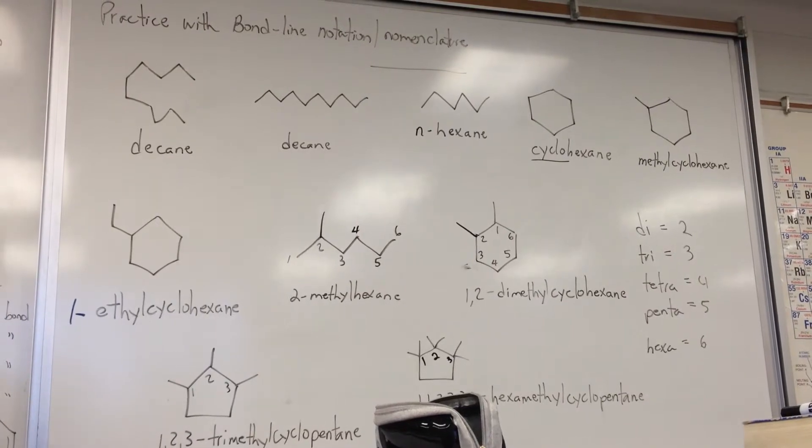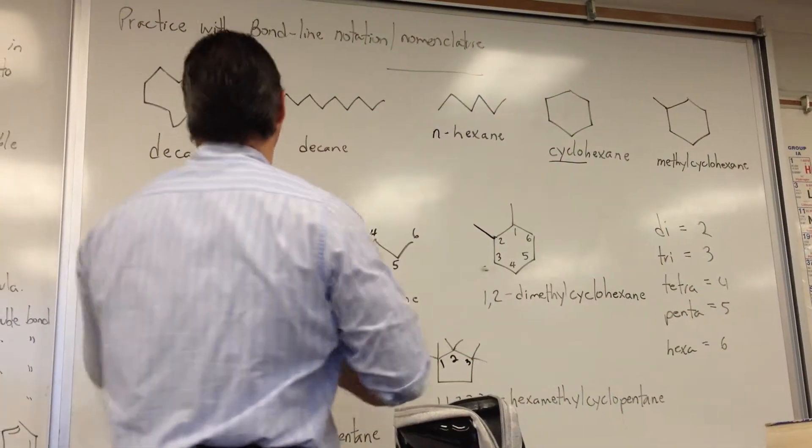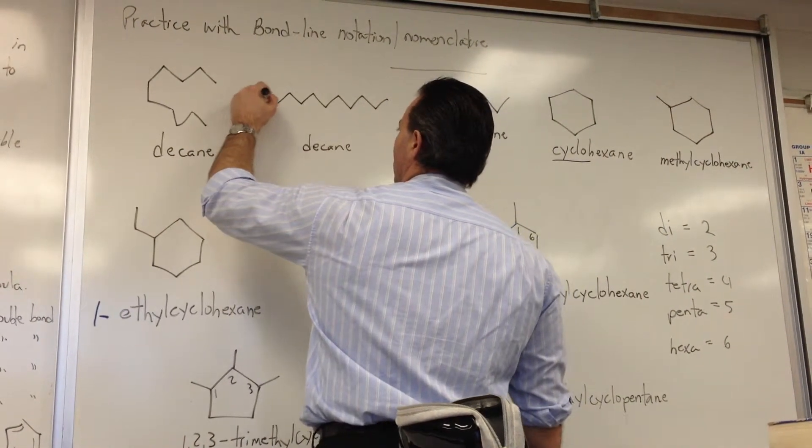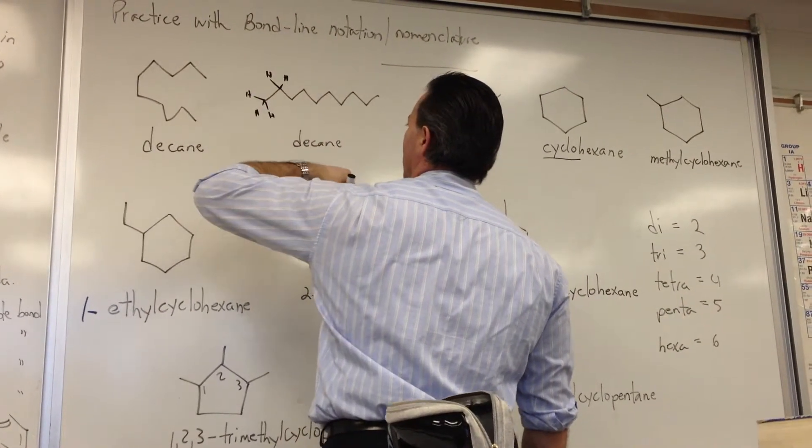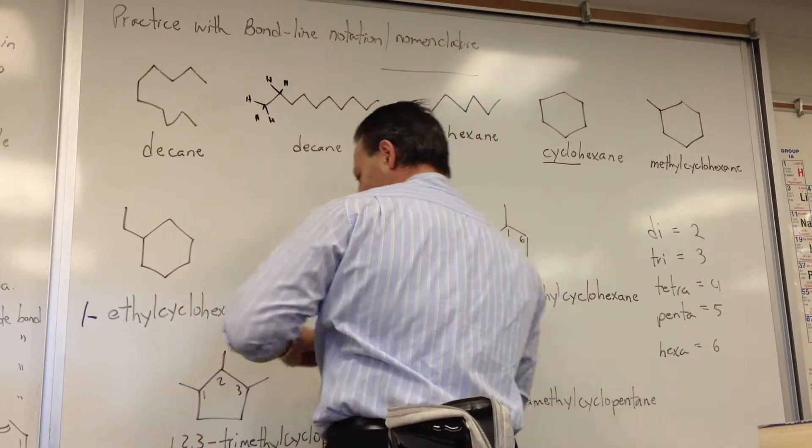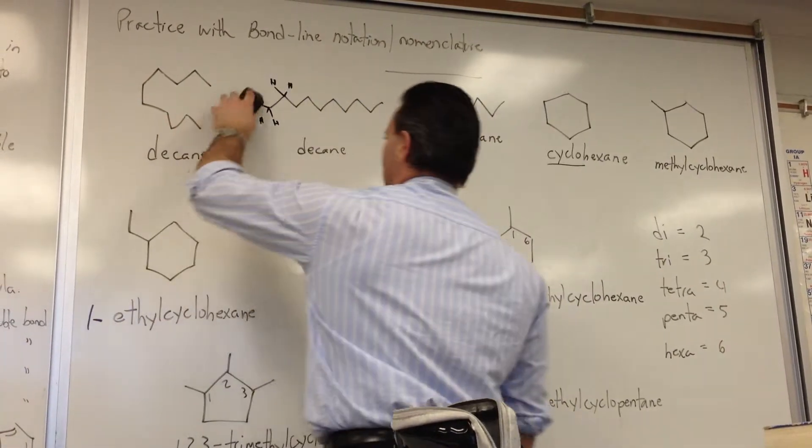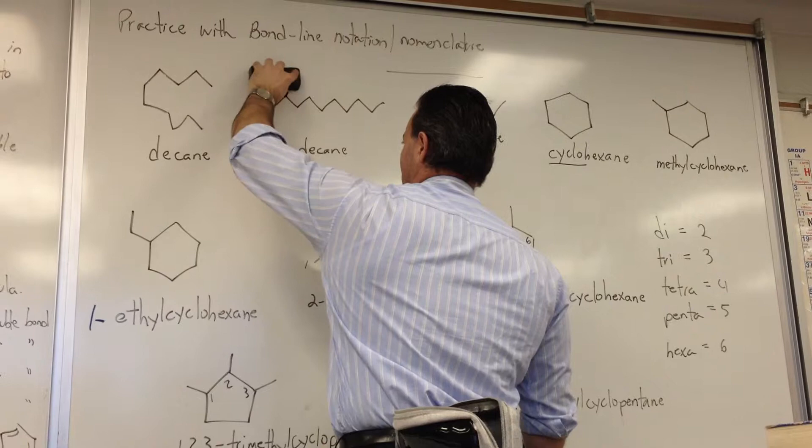If we were to draw all the hydrogen atoms, we would have three on the terminal ends, and two on each interior carbon atom. But to simplify the drawing, all of that is left out. It's assumed to be there, but it's left out for simplicity.